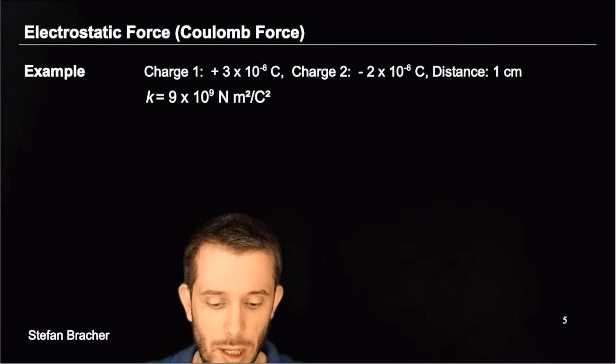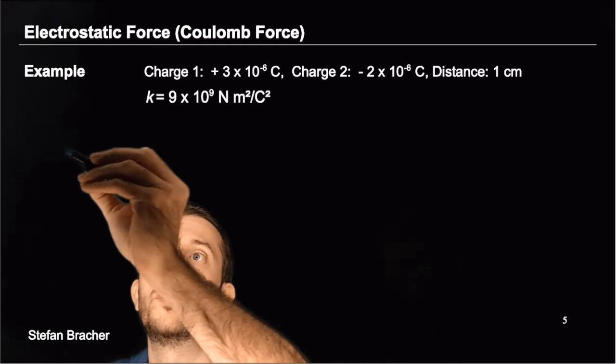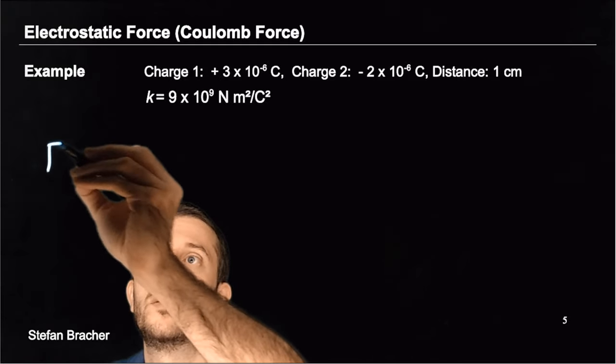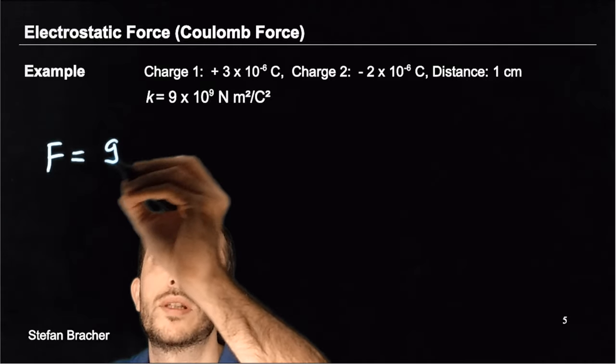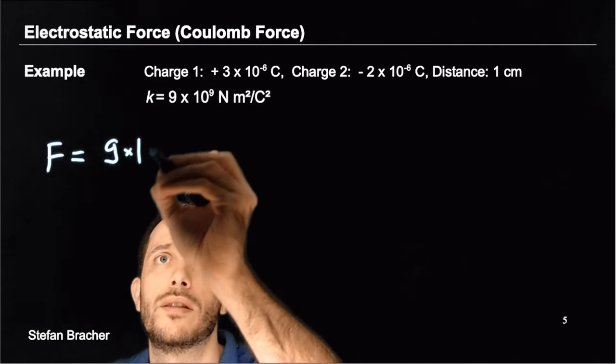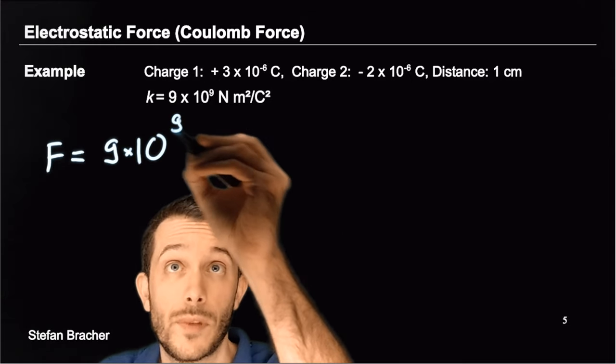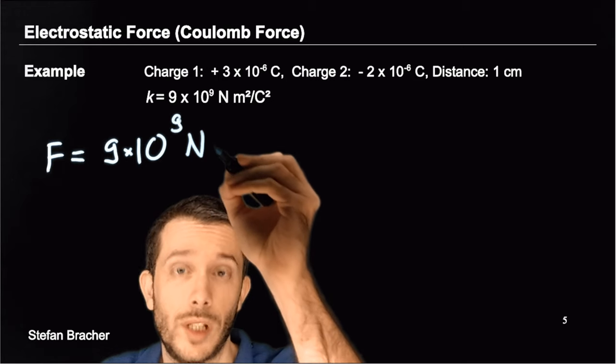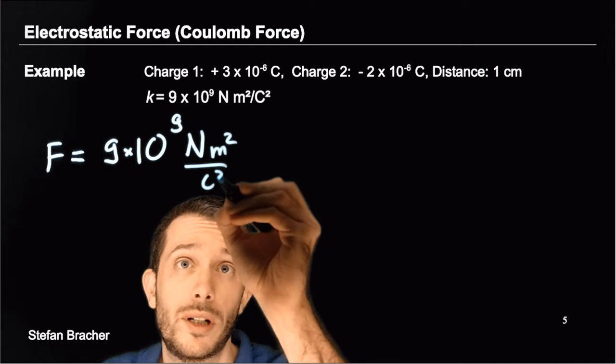Now if I write this out, I have my force. The force is equal to the constant, so times 9 times 10 to the 9 newton meter squared per Coulomb squared.